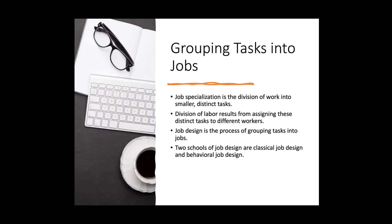Consider job specialization. What do we mean by that term? What we mean is the division of labor into smaller, distinct tasks. The division of labor results from assigning these distinct tasks to different workers. As a result, the individual worker has the opportunity to get better and better and really mature their expertise at a small number of tasks — faster and more efficient. Job design, then, is the process of grouping these tasks into jobs and defining job roles distinctly across different workers.